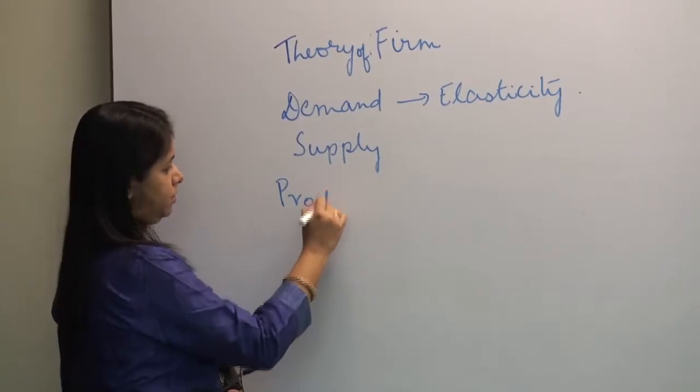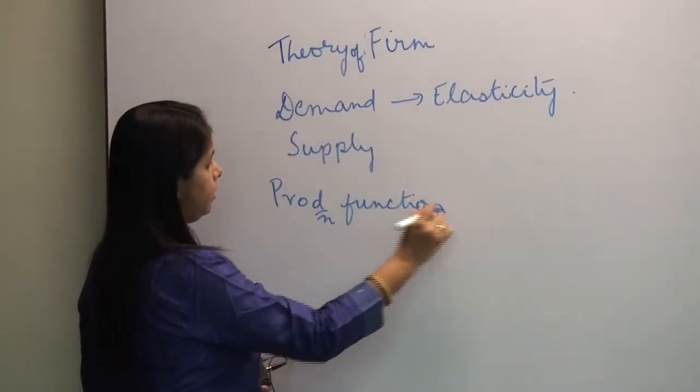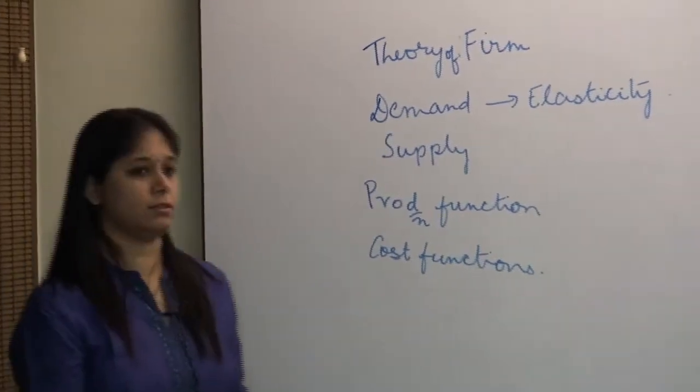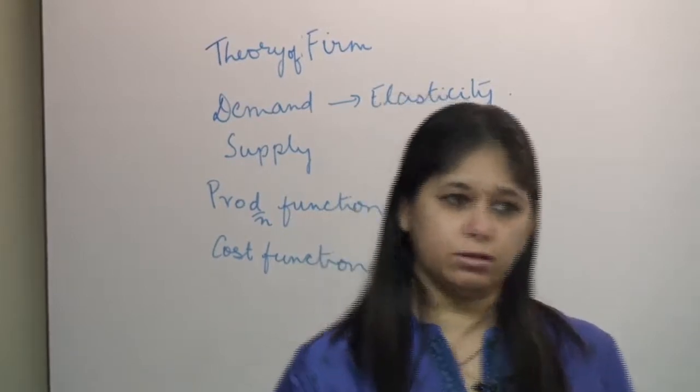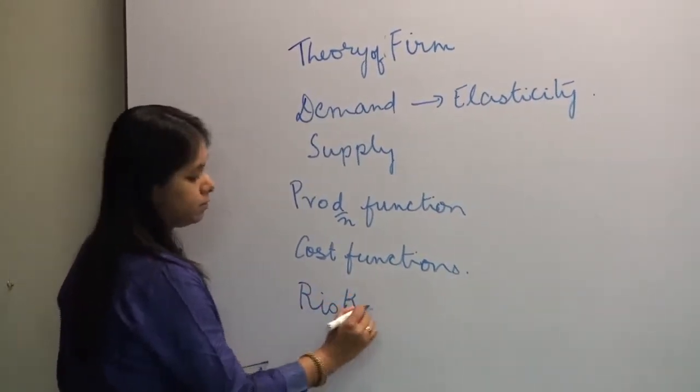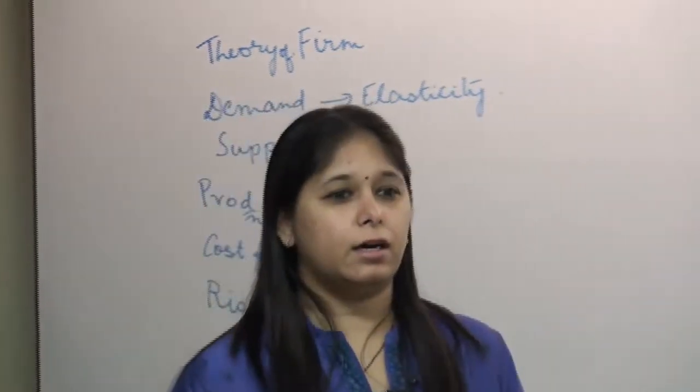We have also discussed the production function and the cost function. Since all these functions — whether related to demand, production, or costs — are not constant, we have assigned certain probabilities to them and arrived at the concept of risk, which arises when the actual outcome differs from the expected outcome. These economic phenomena are present in the whole economy and affect every firm.